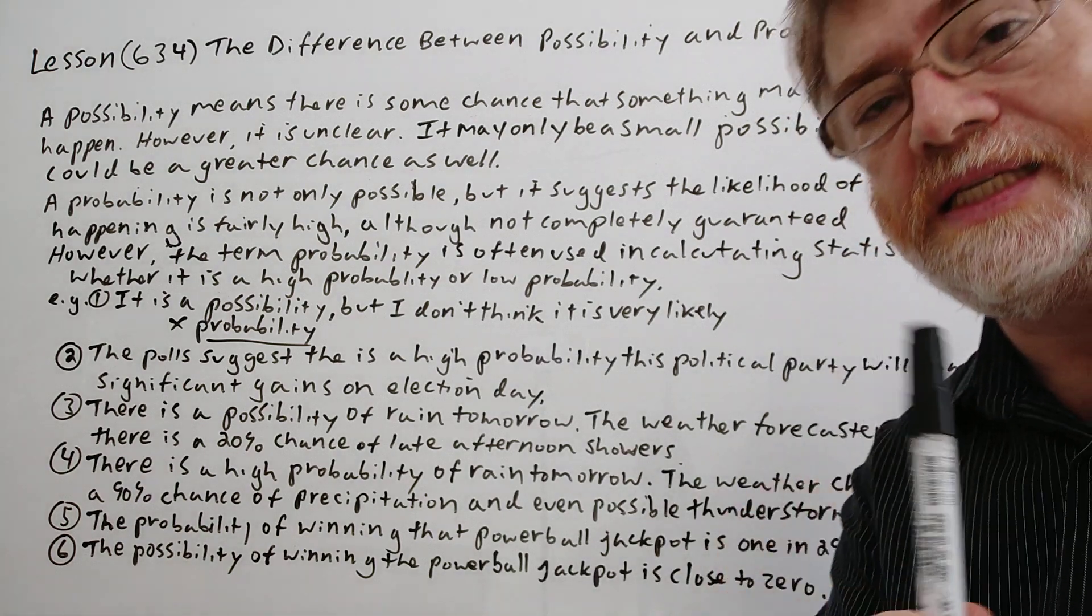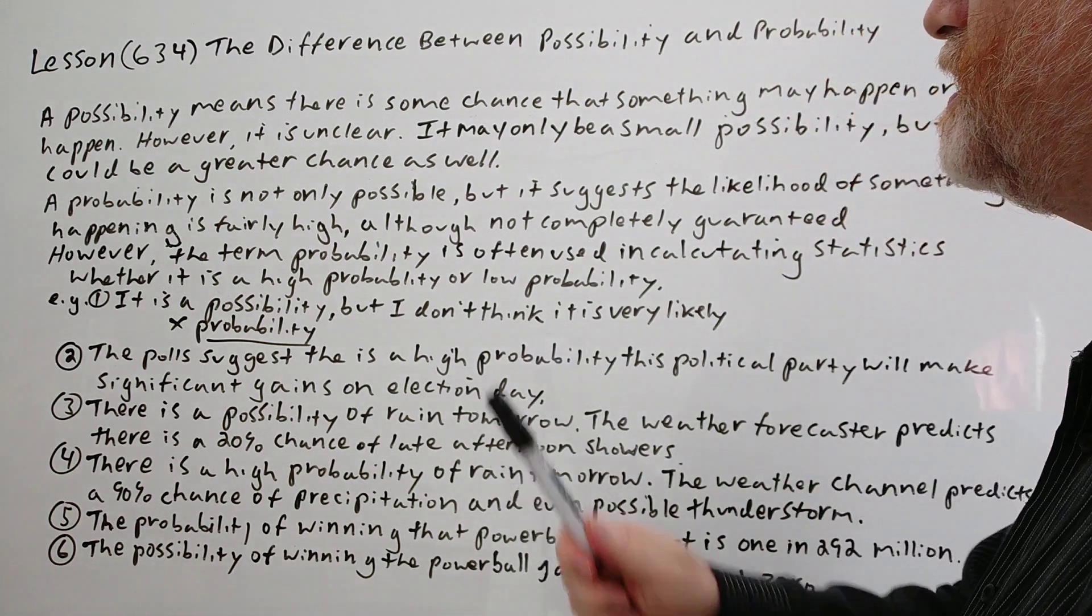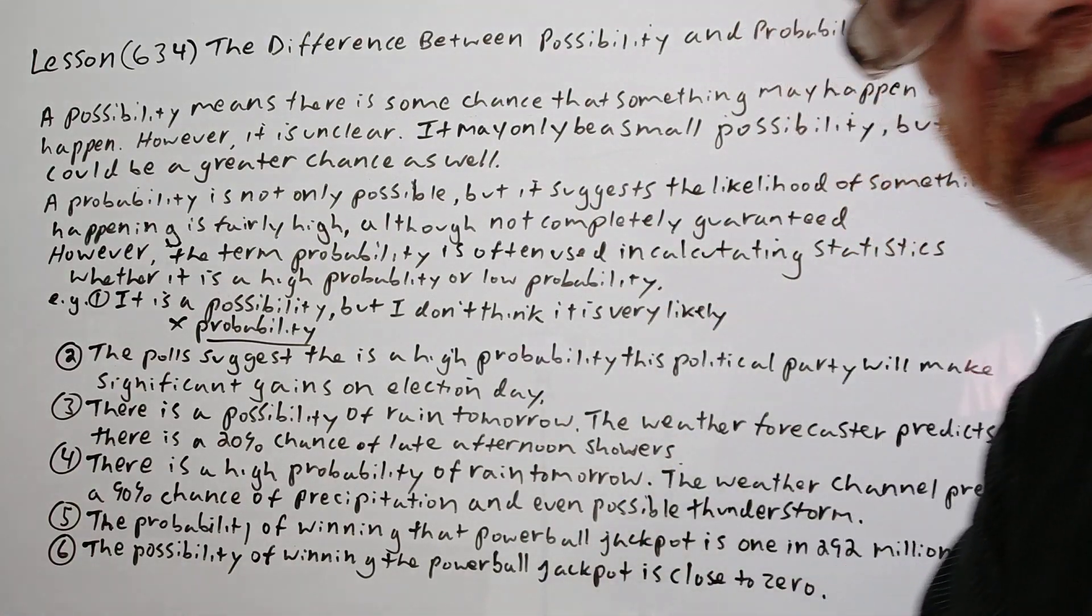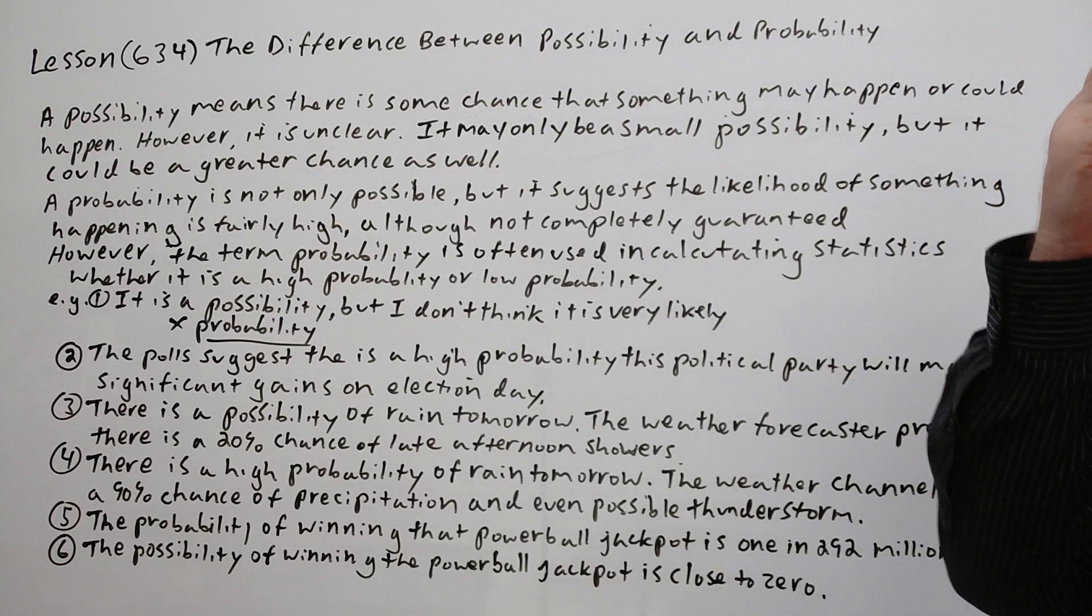Hi, this is Tutor Nick P and this is Lesson 634. The lesson today is the difference between possibility and probability. Somebody want a screenshot right now. Let's get right to it.